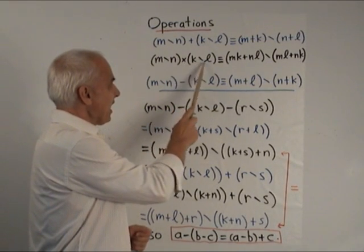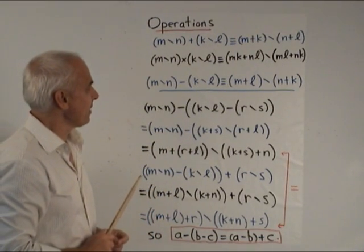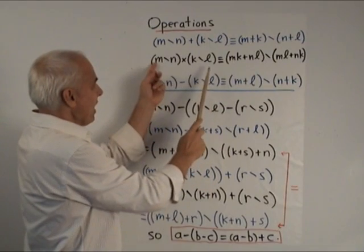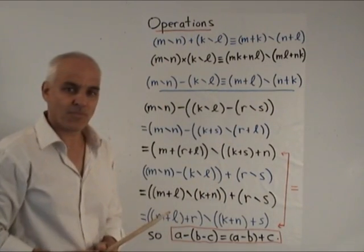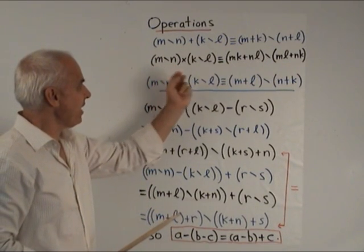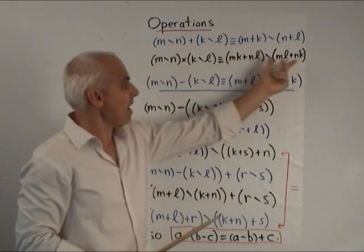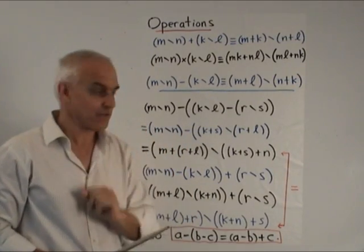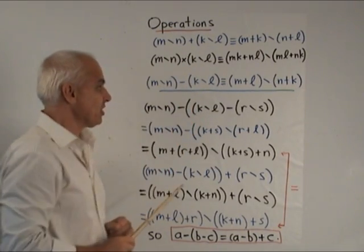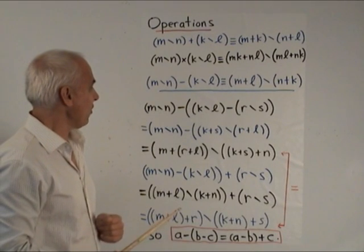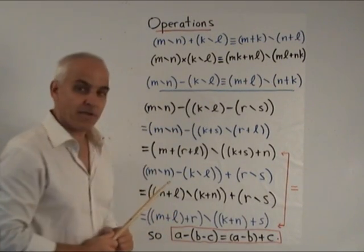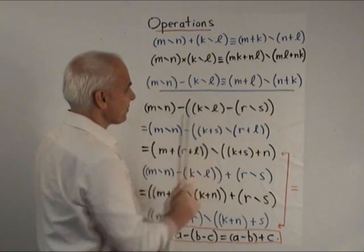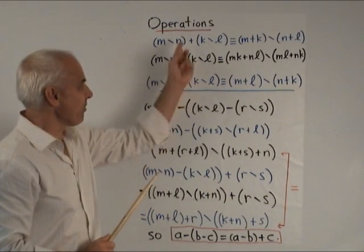For multiplication of integers: m less n times k less l, it's a bit more complicated. We have m times k plus n times l, all of that, less m times l plus n times k. That exactly mimics what would happen if this were m minus n times k minus l. And now we can define the inverse operation to addition — subtraction — defined directly as follows: m less n minus k less l equals m plus l less n plus k. That's the inverse operation to addition.